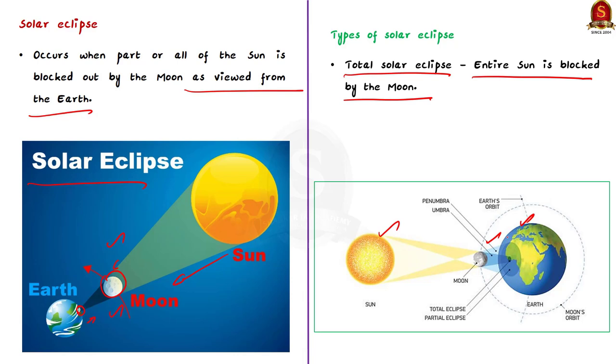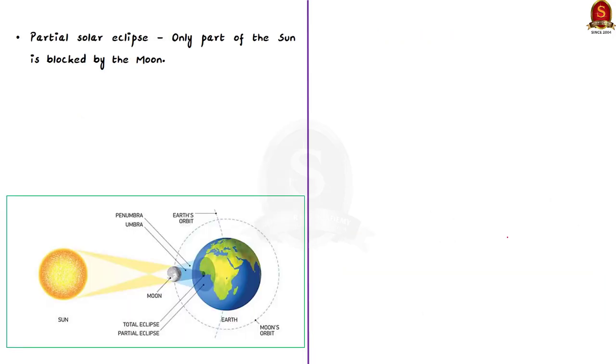Then there is the partial solar eclipse. This occurs when only part of the sun is blocked by the moon, when it crosses the path of the light from sun to earth.